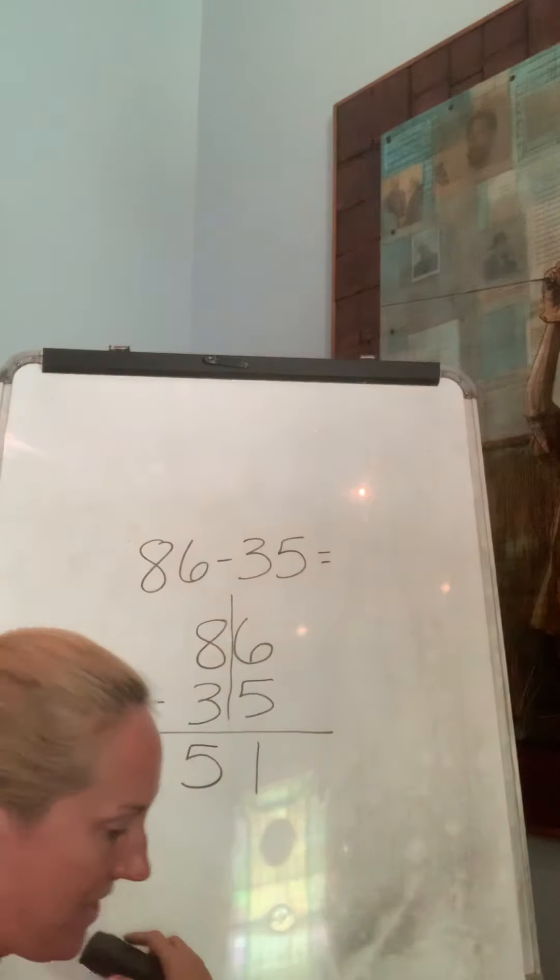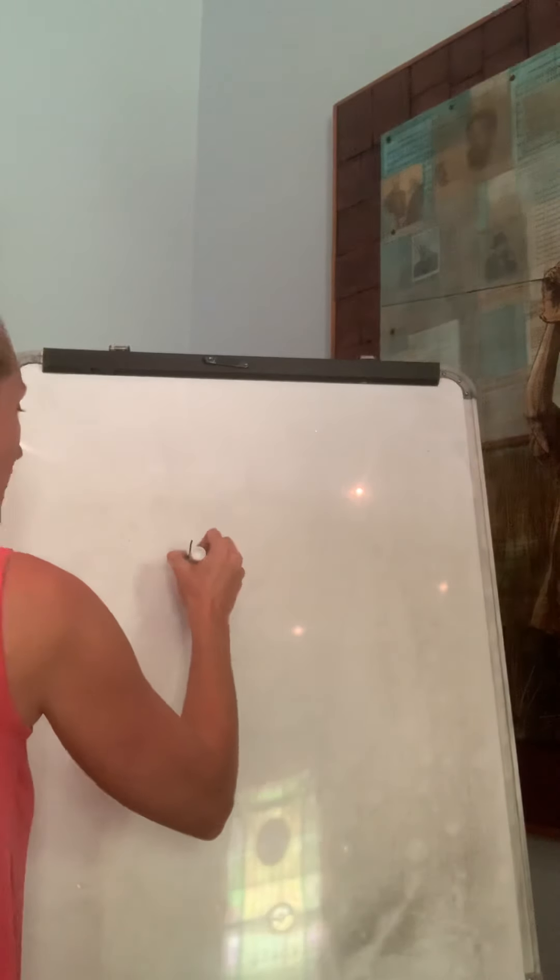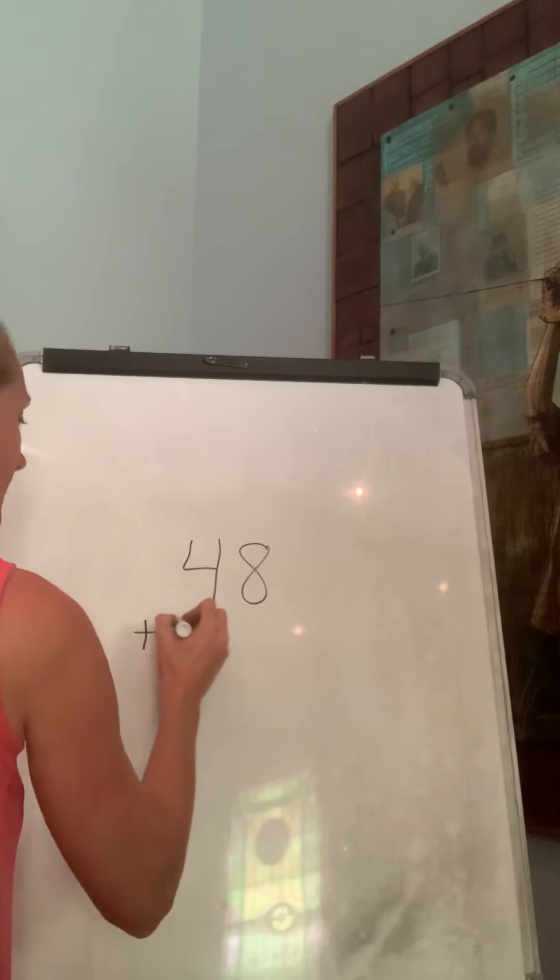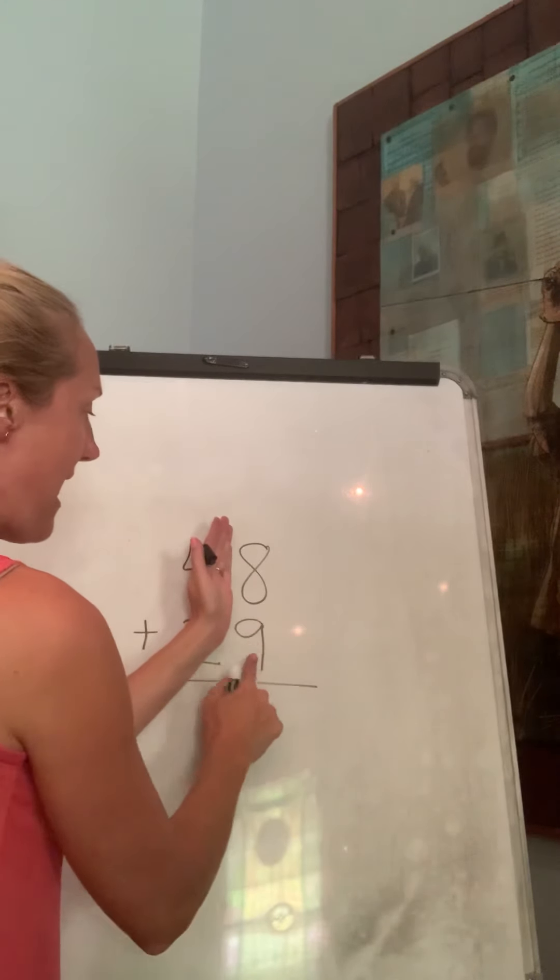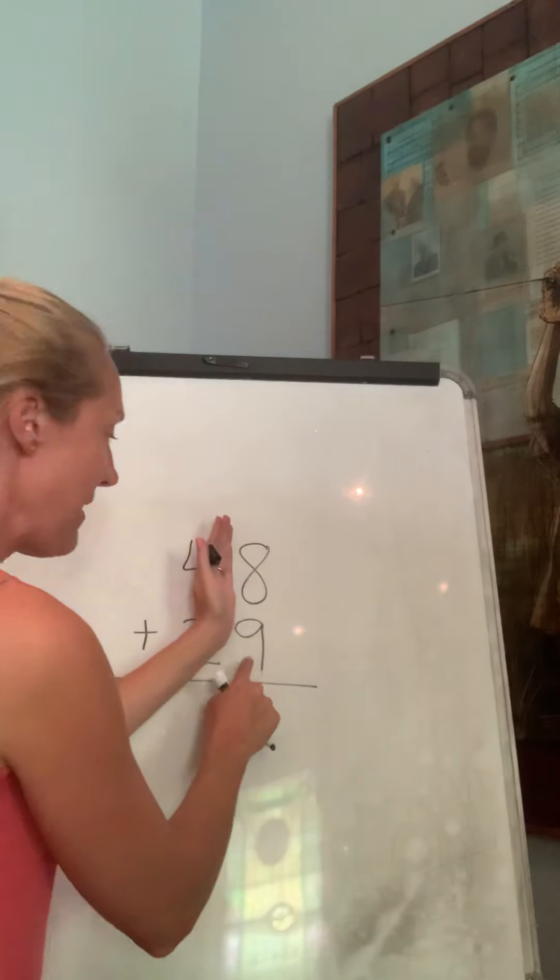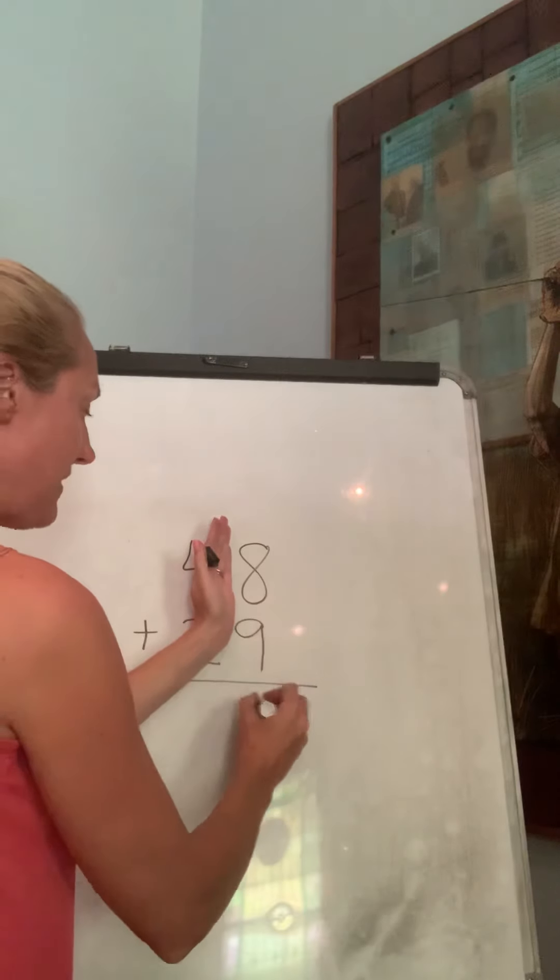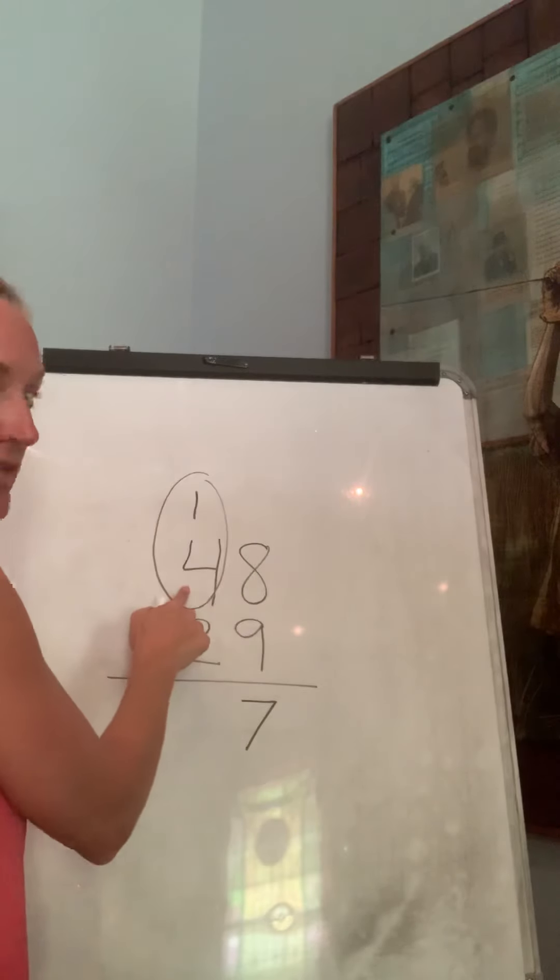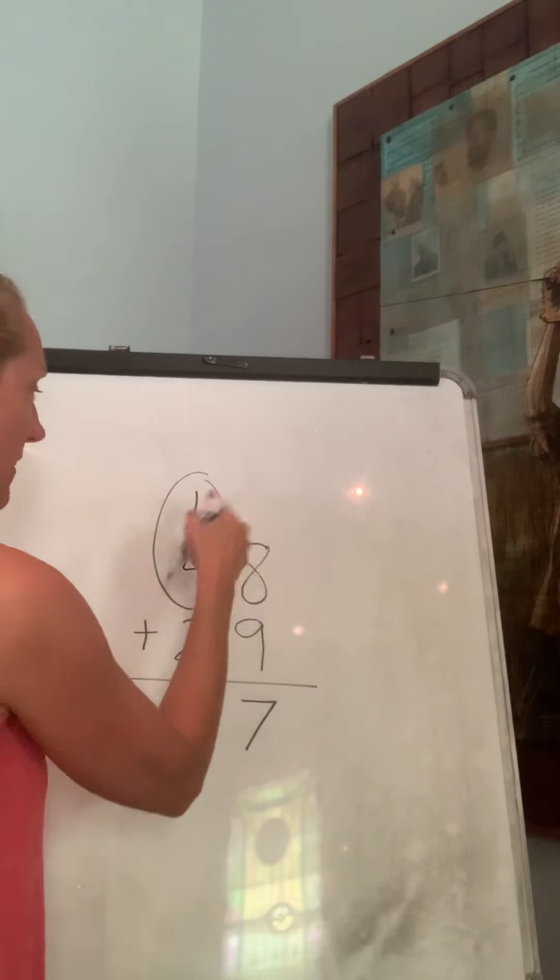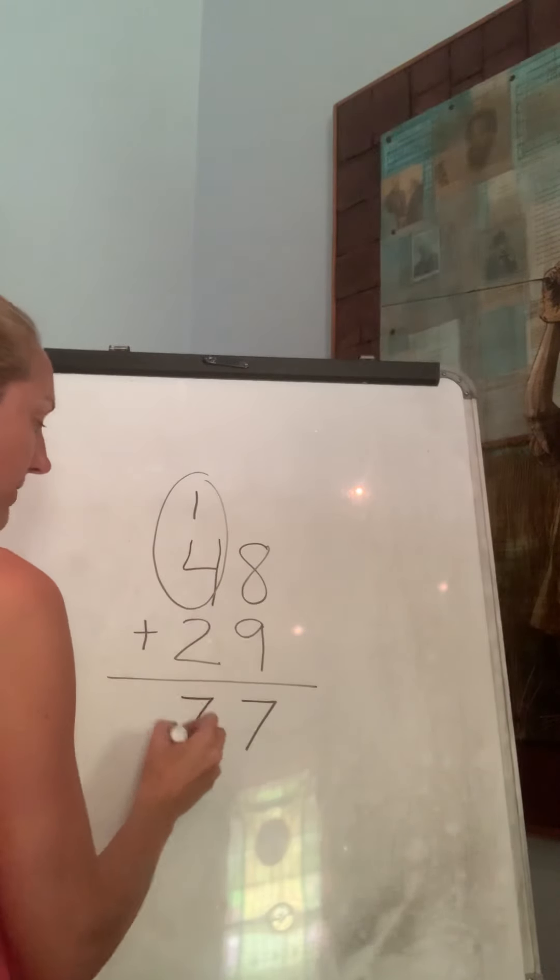Let's go to our next one. 48 plus 29. So I'm going to put them on top of each other, plus 29. Again, we start with the ones. What is 9 plus 8? Well, I know anytime we add something to 9, this number goes down 1 to 7, so it's going to be 17. I put my 10 up here. 4 plus 1 is 4, one more is 5. Now we're going to add 2 more. 5, 6, 7. 77.